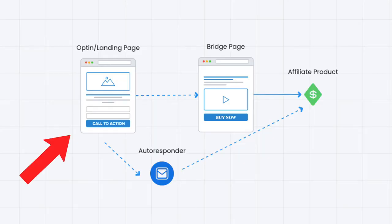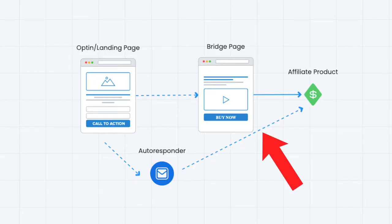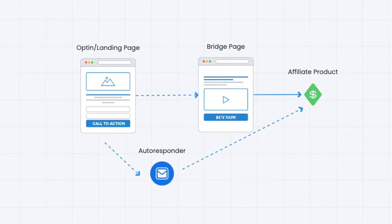There are many different types of funnels you could build. The one we are building today works very well for affiliate marketing. It starts with an opt-in page or landing page — the main target of that page is to capture the email address — then we send them to a bridge page where we introduce the affiliate product, and then we send them to the affiliate sales page. It's a fairly short funnel but very effective for affiliate marketing.